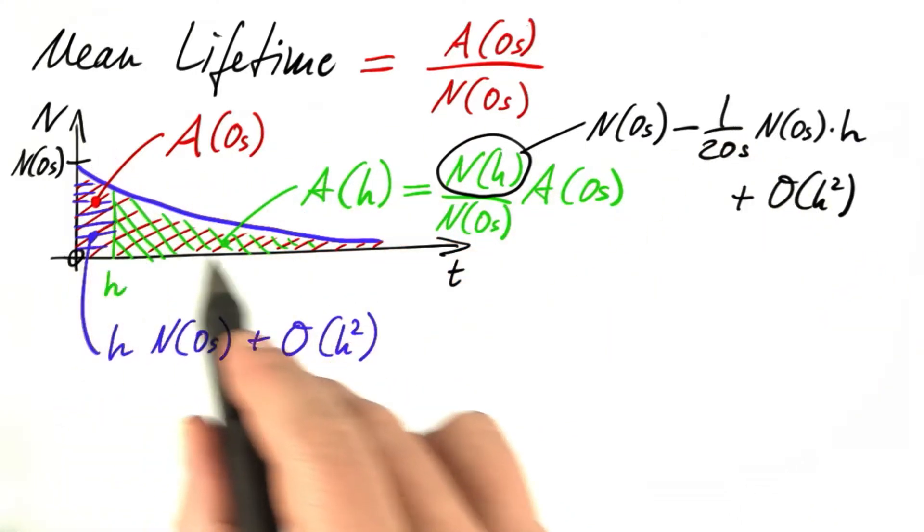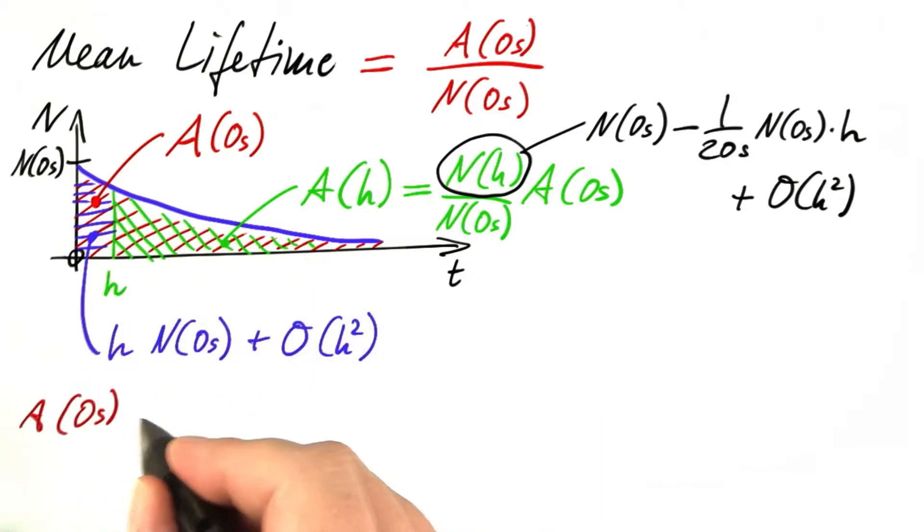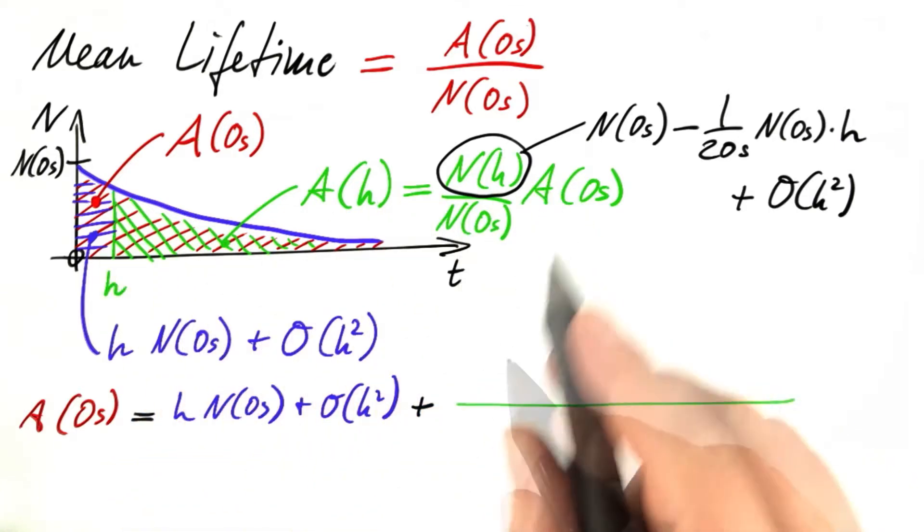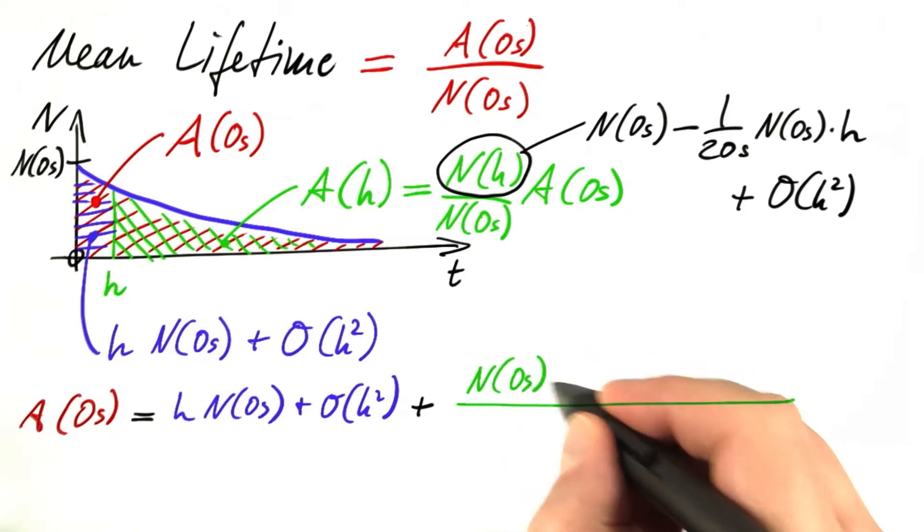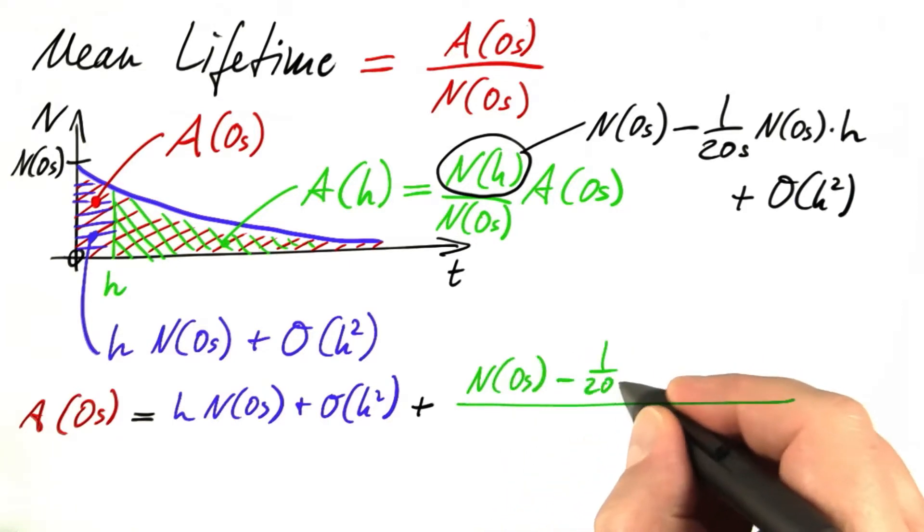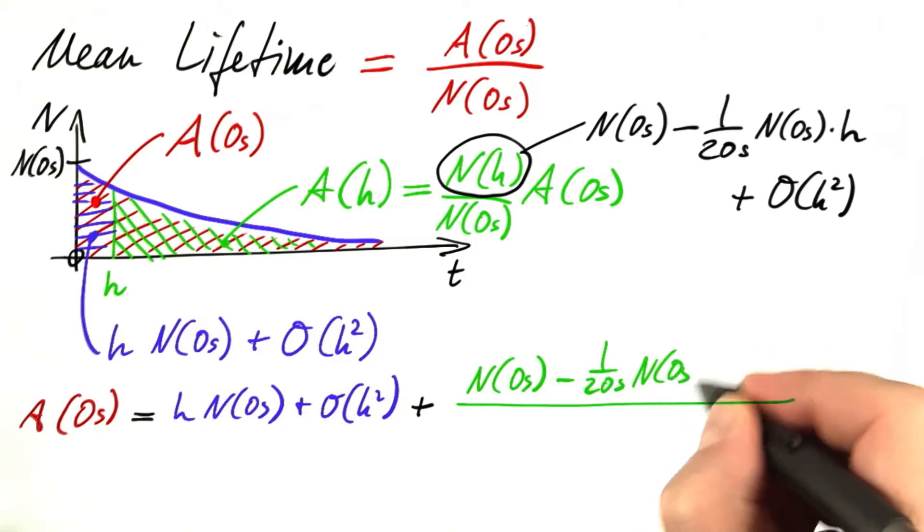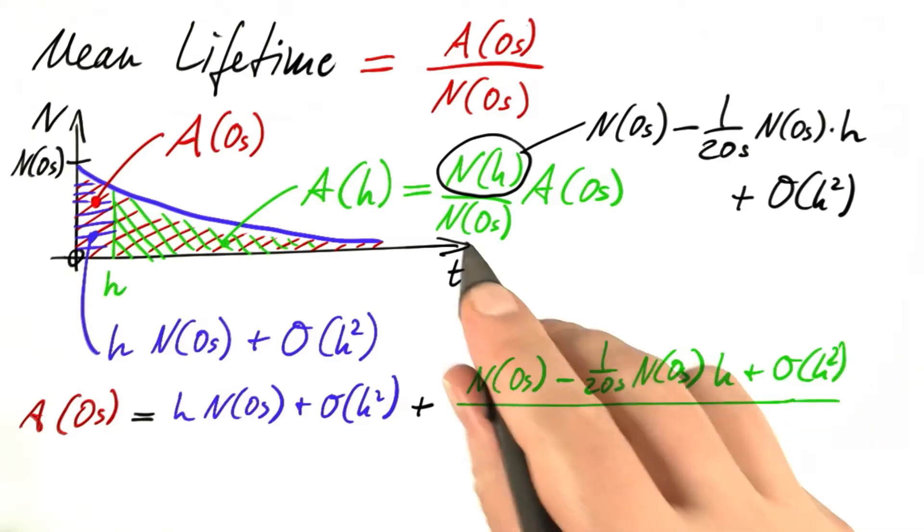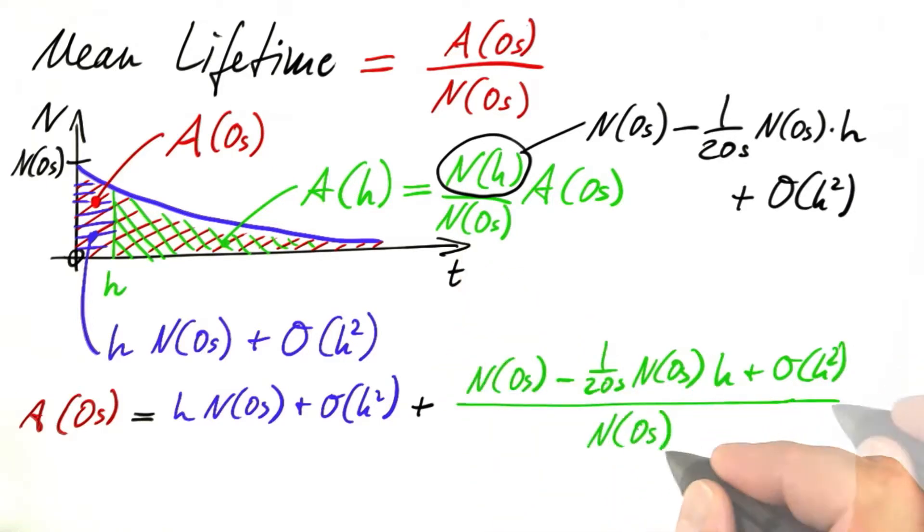And now let's put all of that together. The complete area, the red area, equals the blue area plus the green area. So that's the initial number of particles minus 1 over 20 seconds times the initial number of particles times h plus something of the order of h squared divided by the initial number of particles times the total area. And now look at what remains. We've got the complete area on the left-hand side and we've got the initial number divided by the initial number times the complete area on the right-hand side.